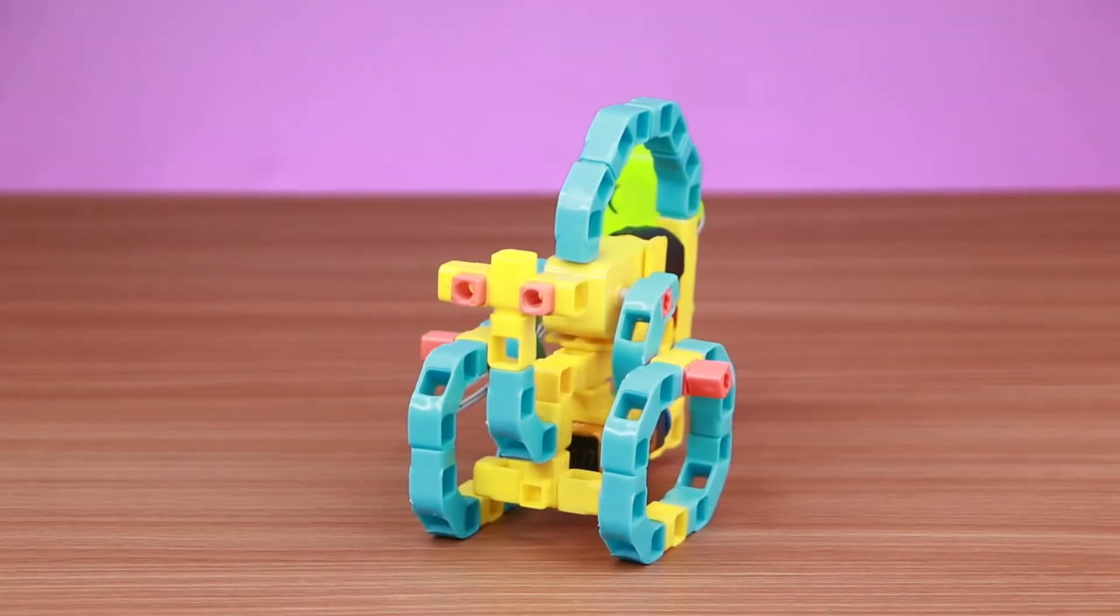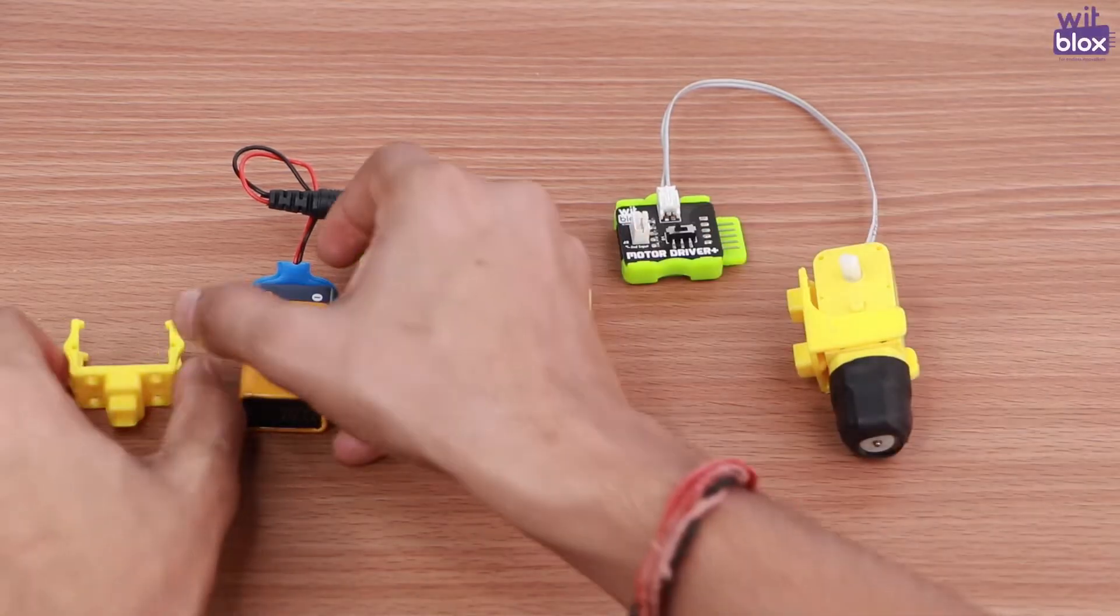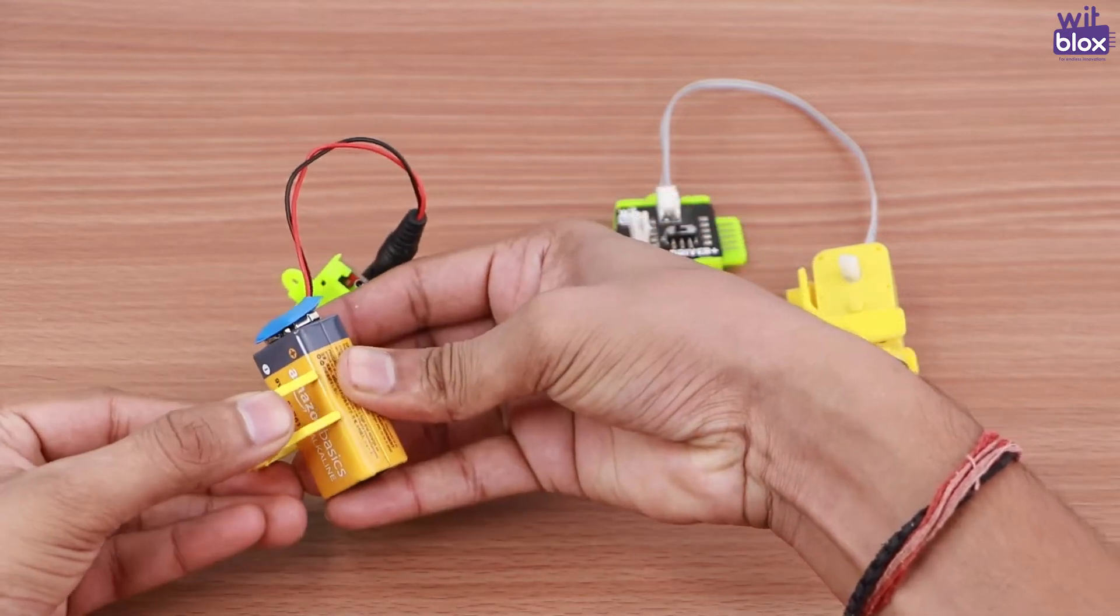To build this, we will use wit bricks to build the structure and wit blocks motor. So first let's make the base of the snail robot.